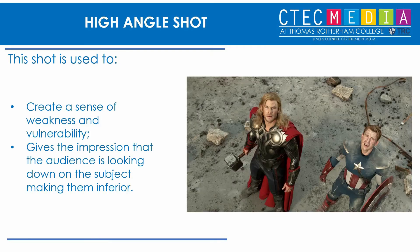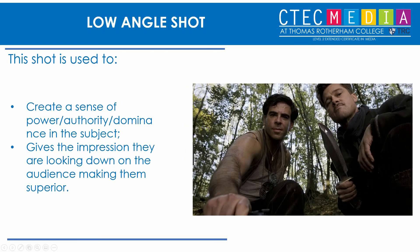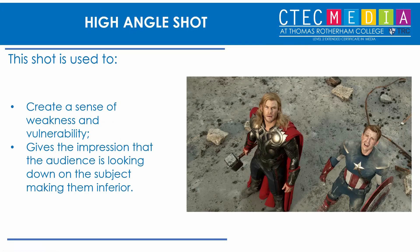A high angle shot gives the exact opposite effect — you are looking down on whatever is in the shot, making people look inferior, weak, and vulnerable. You can see Thor and Captain America in a high angle shot and they look weaker, appearing smaller. Compare that to the low angle — those guys look massive. You'll often see a shot-reverse-shot technique where a low angle is followed by a high angle to create a sense of dominance between two characters.